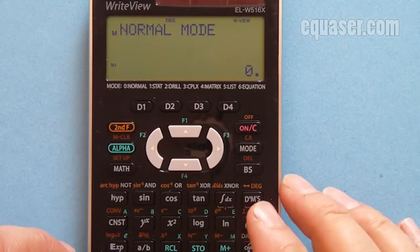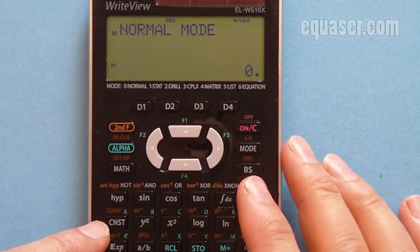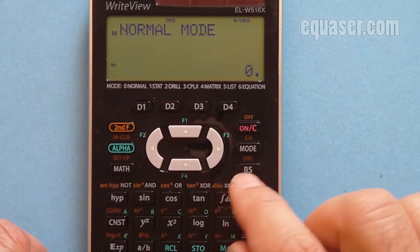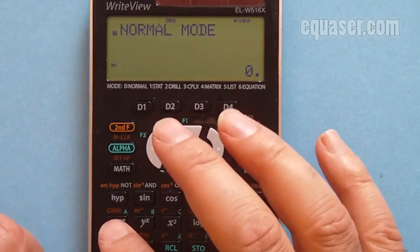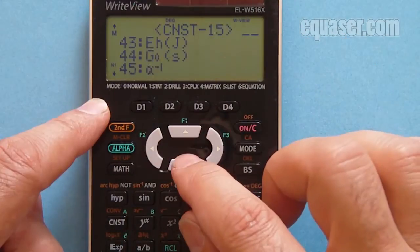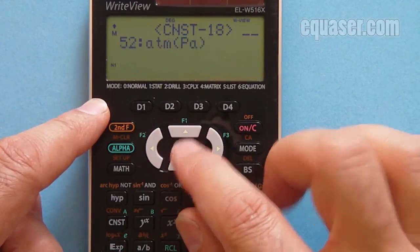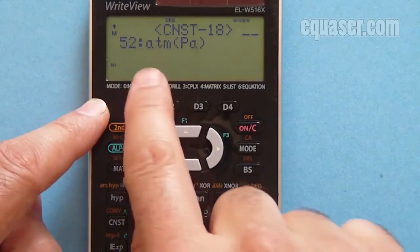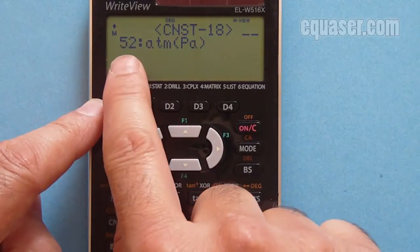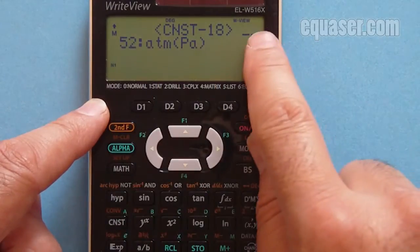If I want to bring the value on the screen, I press constant. To bring atmospheric pressure, which is 52, I scroll to the value I want. I press 5 and you will see 52 here. That's the value in exponential form, but if I press enter I'll get the actual value.